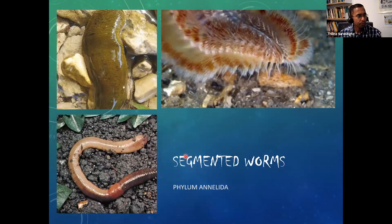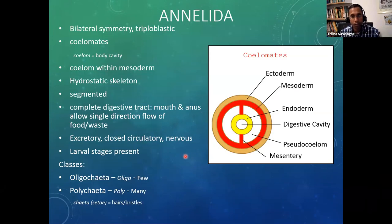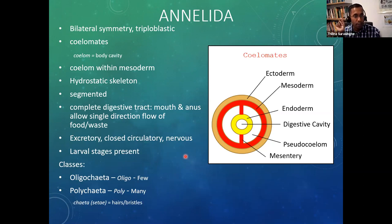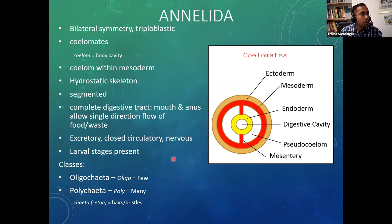Now we are done with Platyhelminthes and moving to a new phylum: Annelida, commonly called segmented worms. Key characteristics: they are bilaterally symmetrical and triploblastic, as are many other animals. They are coelomic — they have a true body cavity — and the coelom is completely surrounded by mesoderm, one of the three germinal layers.